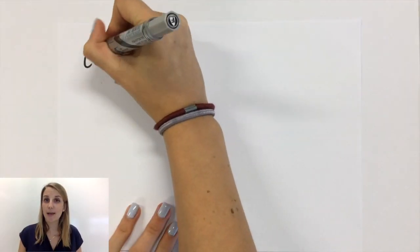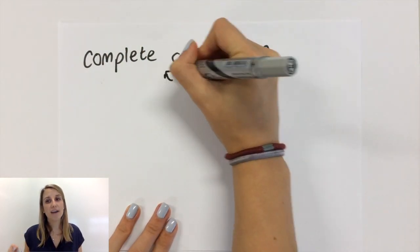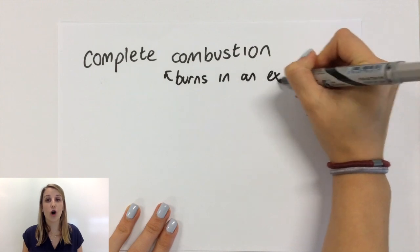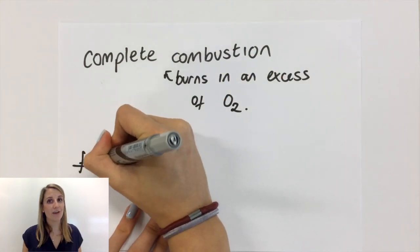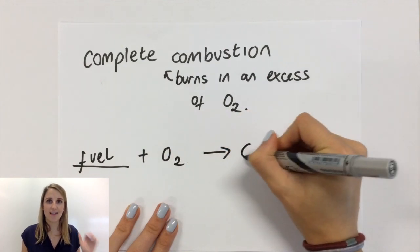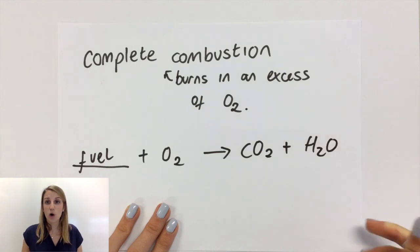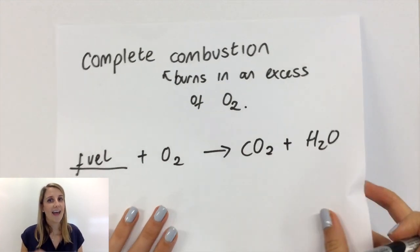As we've covered in a previous video, complete combustion just means that you are burning it in an excess of oxygen. So if you write a general formula for complete combustion, you end up with the fuel, which could be an alcohol, an alkane, an alkene, plus oxygen gives you carbon dioxide and water every time.